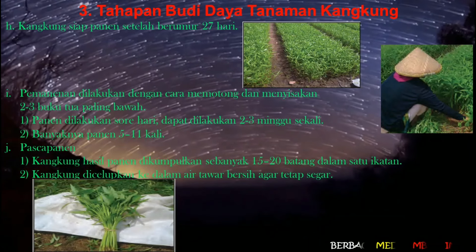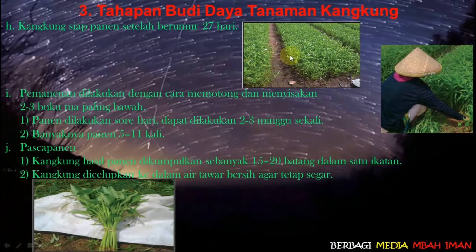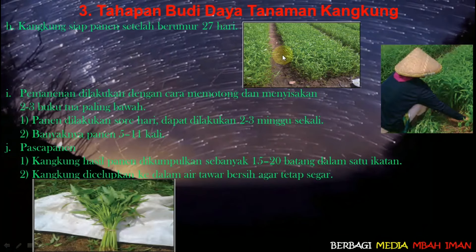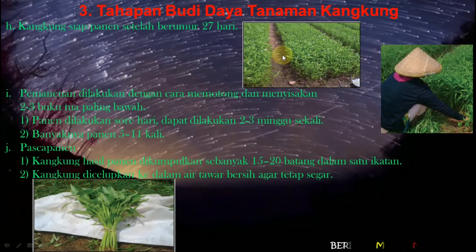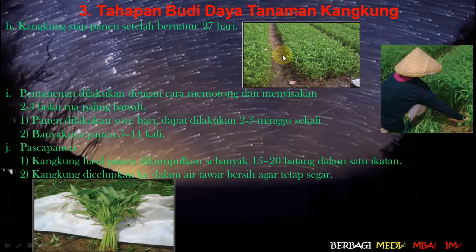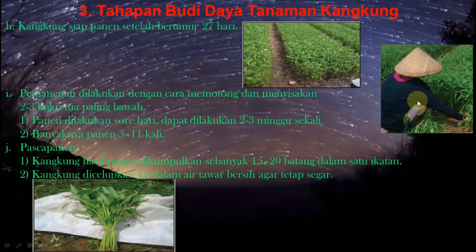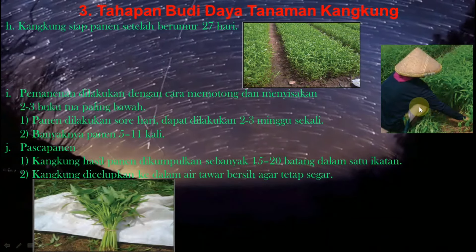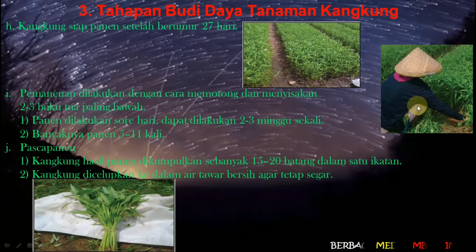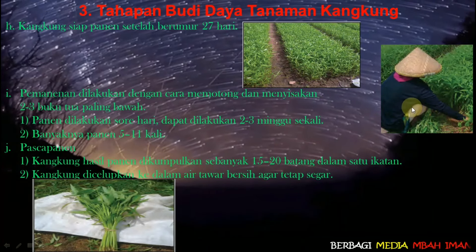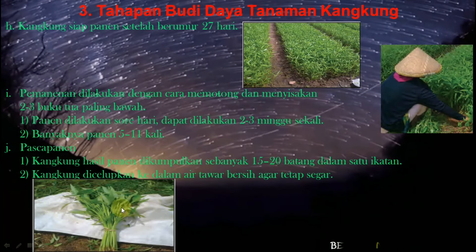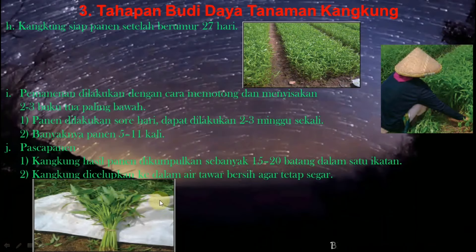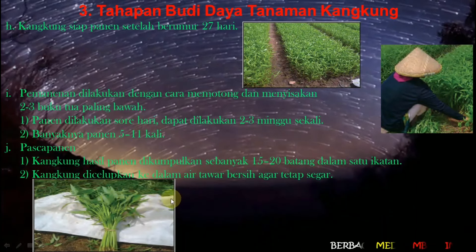Kangkung siap panen setelah berumur 27 hari. Pemanenan dilakukan dengan cara memotong dan menyisakan 2–3 buku tua paling bawah. Panen dilakukan sore hari, dapat dilakukan 2–3 minggu sekali, dan banyaknya panen 5–11 kali. Pasca panen: kangkung hasil panen dikumpulkan sebanyak 15–20 batang dalam satu ikatan, kemudian kangkung dicelupkan ke dalam air tawar agar tetap segar.